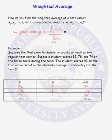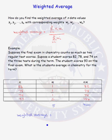To get the numerator of our weighted average, we add up those four products: 82, 78, 74, and 186, which gives 420. The denominator is the sum of all the weights, which in this problem is 1 plus 1 plus 1 plus 2, equal to 5. So the weighted average is 420 divided by 5, which is 84.